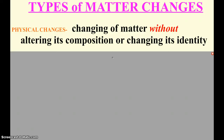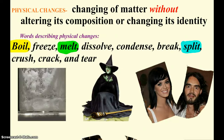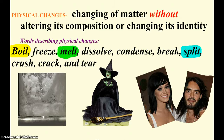A physical change of matter changes that matter without altering its composition or changing its identity. If you take a piece of paper and tear it in half, you physically change it — it's still paper, just looking different. Examples of physical changes include boiling, freezing, melting, and all our phase changes of matter. Dissolving is a big one — when you dissolve sugar in water, it's still there; you can evaporate the water and get the substance back. Other examples: condensing, breaking, splitting, crushing, cracking, tearing — anything that changes the physical form but not the substance itself.